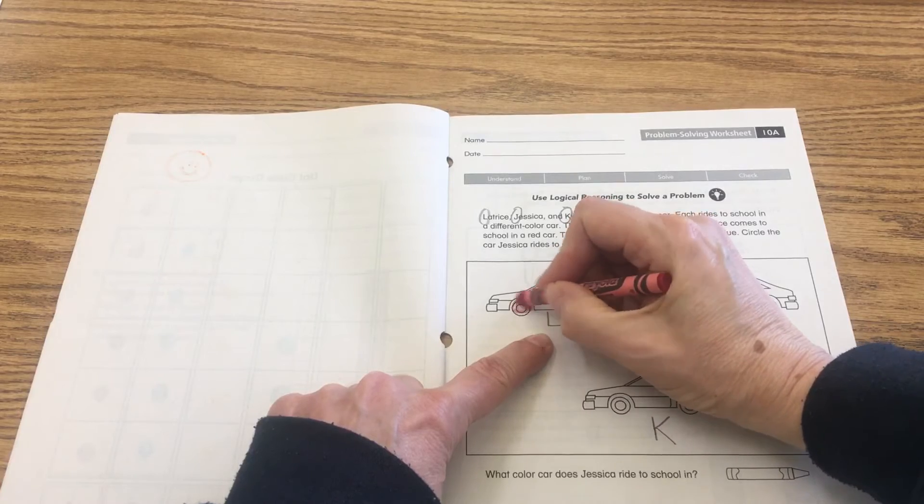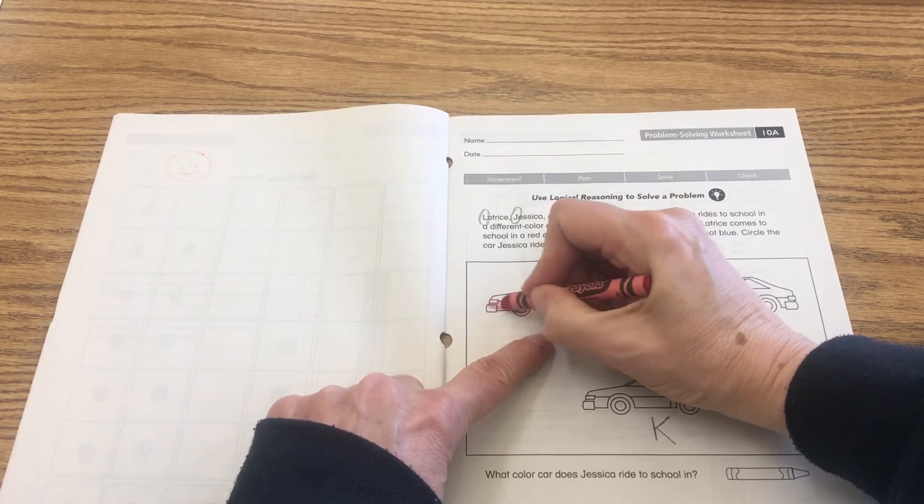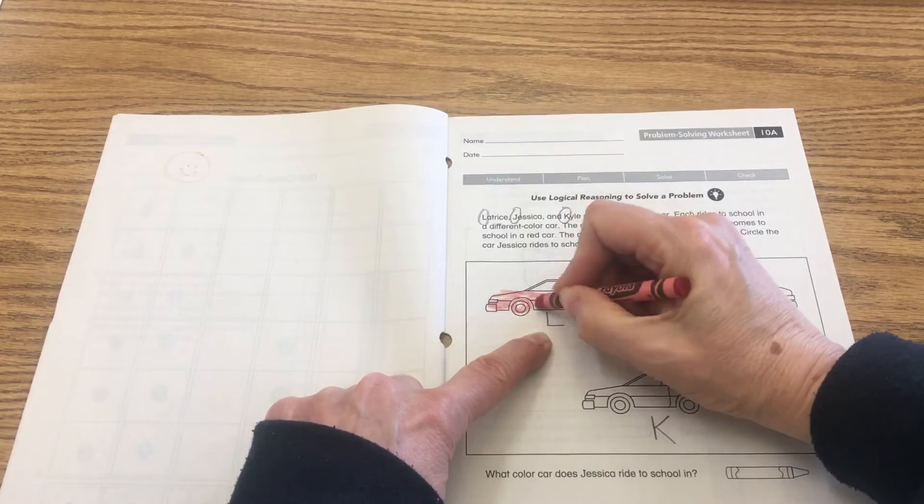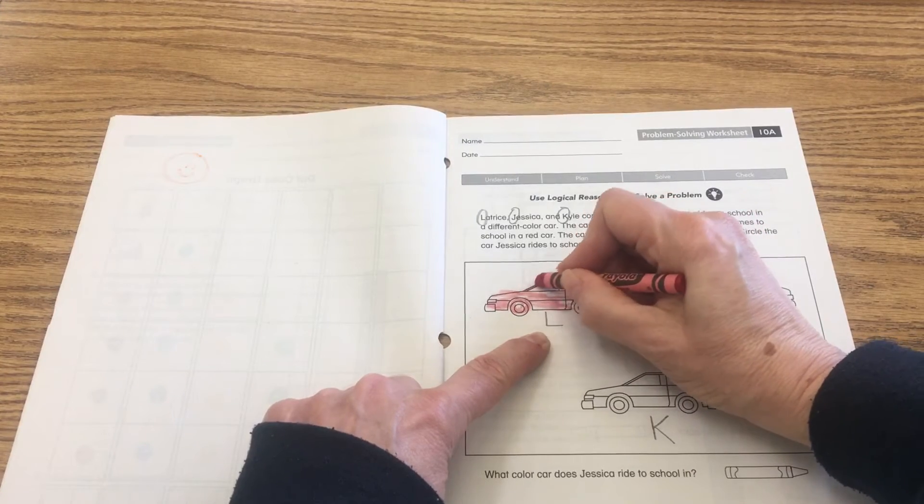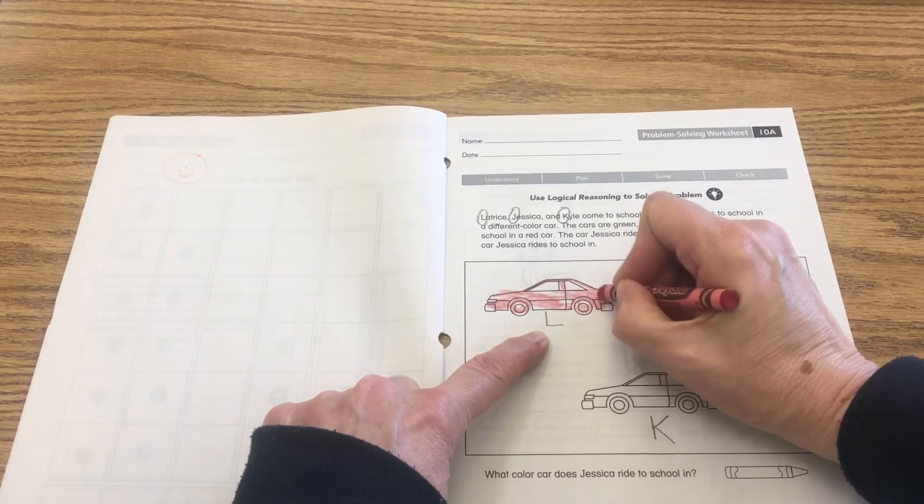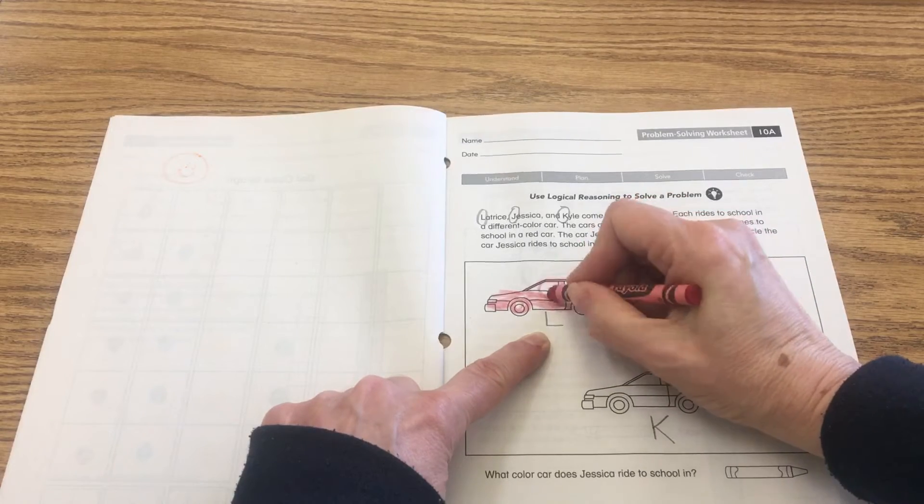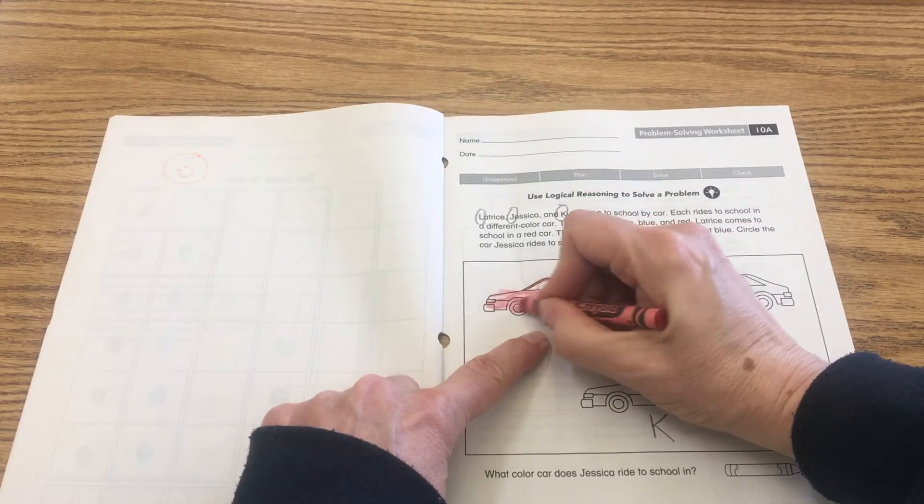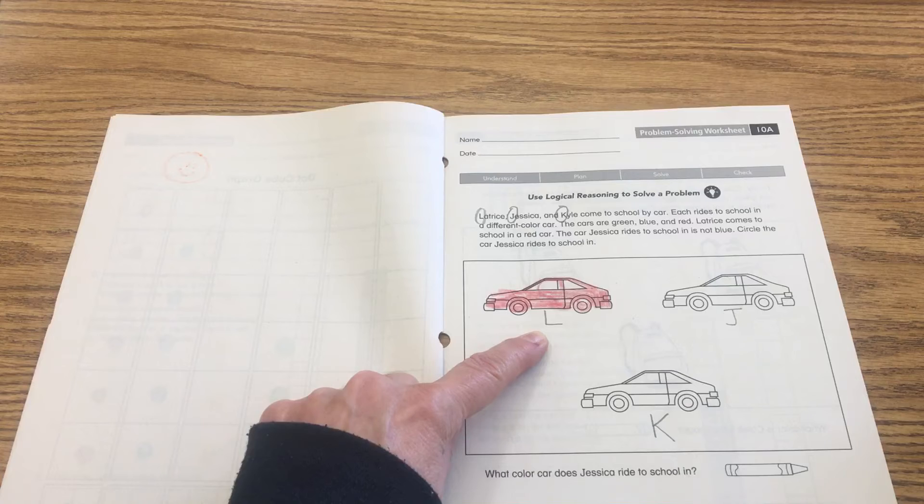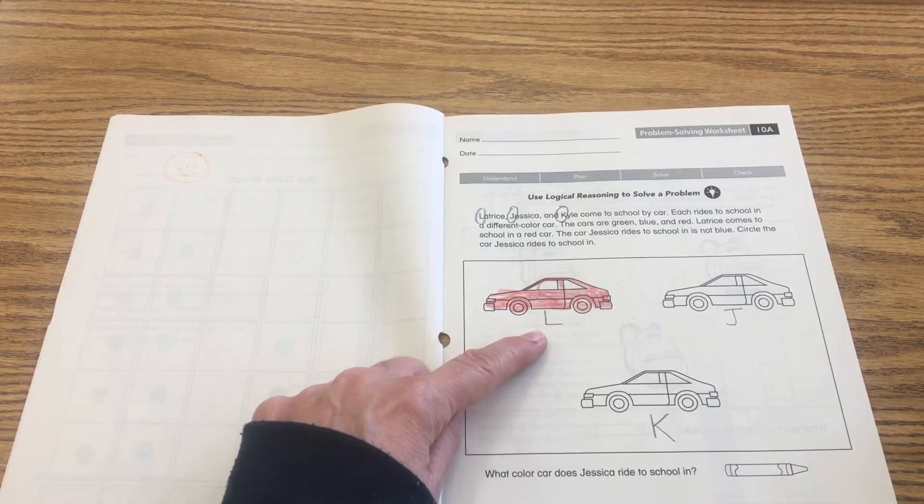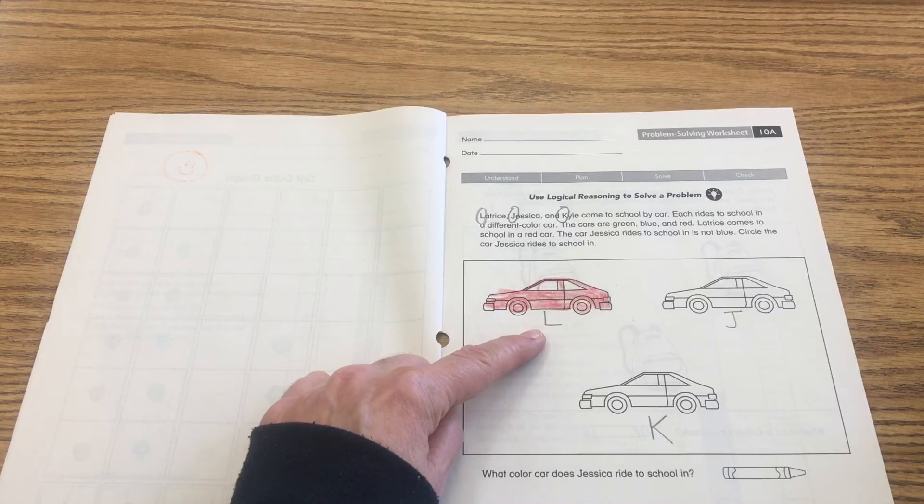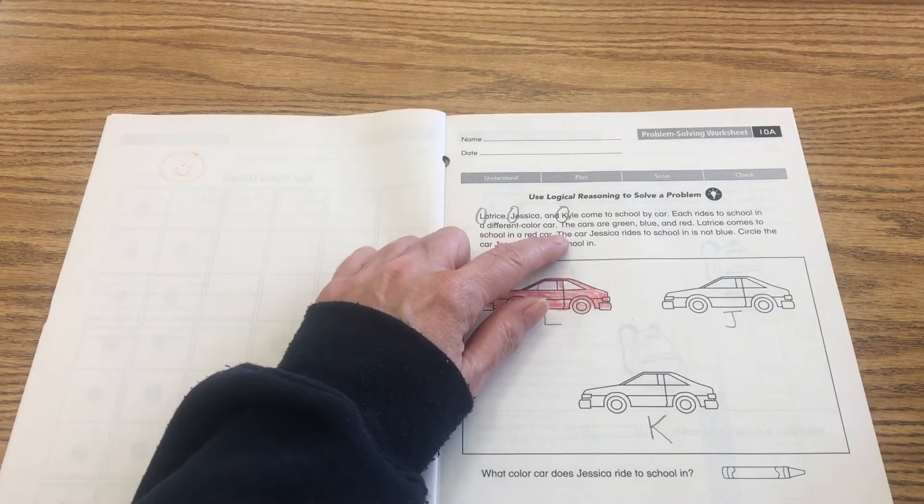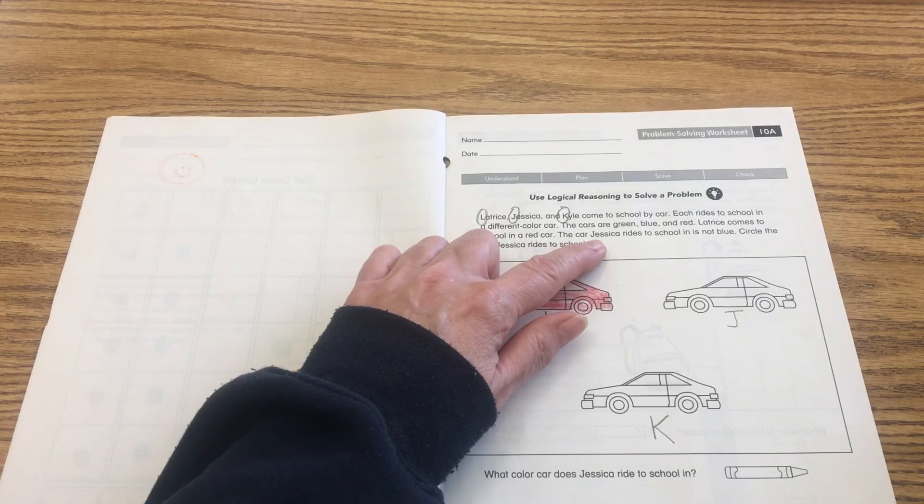Go ahead and do this along with me. Just use your crayon and you're just gonna color that whole car red. It doesn't have to be perfect, just to know that that's the red car. So we know Latrice comes in the red car. Then it says the car Jessica rides to school in is not blue.